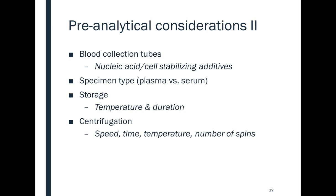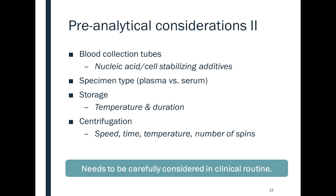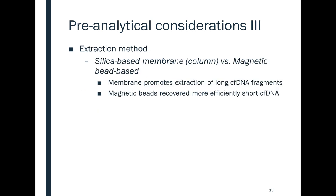In addition to blood collection tubes and specimen type, storage conditions — meaning temperature and duration — should be tested and established in the lab. Storage duration depends on the type of blood collection tube used. When analyzing plasma samples, the centrifugation procedure must be tested and validated with local equipment. Parameters to test include speed, time, temperature, and number of spins, as all parameters can influence cfDNA yield and quality.